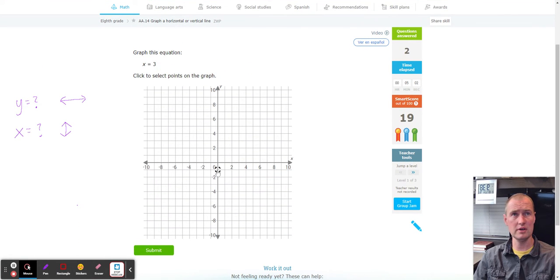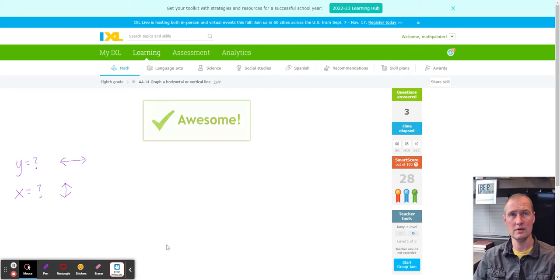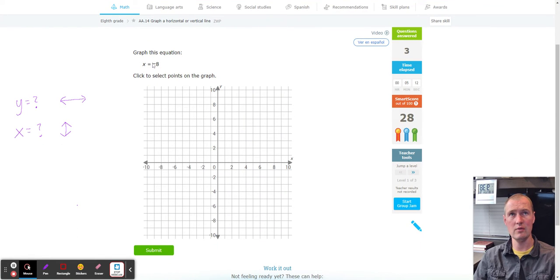Next, we have X equals three. So find X equals three, one, two, three, and just make it go vertical through X equals three. Next, we have X equals negative eight, negative one, two, three, four, five, six, seven, and negative eight right there. And make the line go vertical through negative eight.